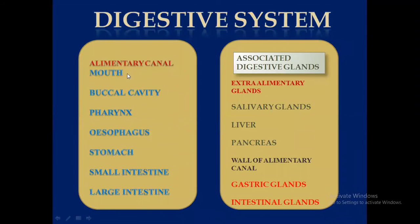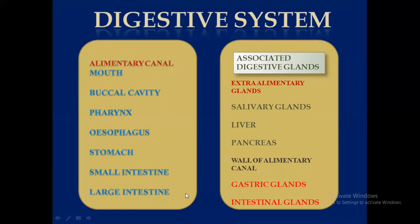In the alimentary canal we may see different parts: mouth, buccal cavity, pharynx, esophagus, stomach, small intestine, large intestine, and the end region, the anus. The alimentary canal starts with the mouth and ends with the anus.